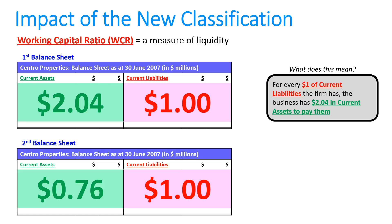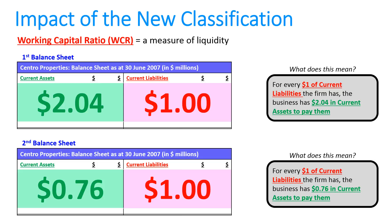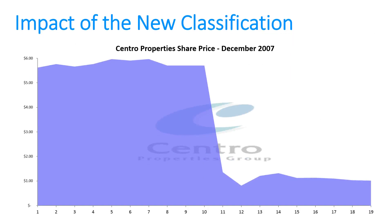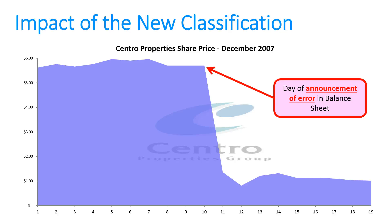We need to be able to explain that in words when doing our own analysis in Year 12 accounting. The liquidity on the corrected balance sheet is terrible, while on the original wrong balance sheet it appeared terrific. When the error was announced in December, the share price fell from just under $6 all the way to under $1 — roughly an 80% drop in a single day — because every shareholder made the decision to sell Centro shares, demonstrating the real impact of relevance in financial decision-making.